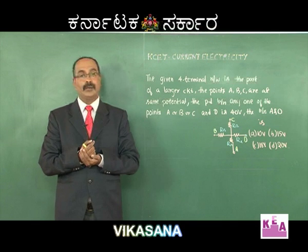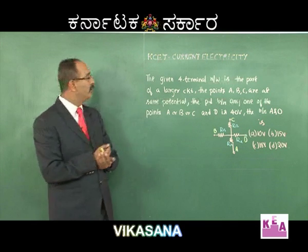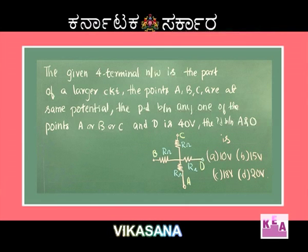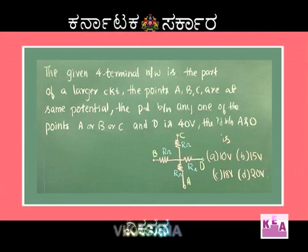Next problem: a given four-terminal network is part of a larger circuit. Points A, B, and C are at the same potential. The potential difference between any one of the points A, B, or C and point D is 40 volts. Find the potential difference between A and O. Options: A) 10 volts, B) 15 volts, C) 18 volts, D) 20 volts.